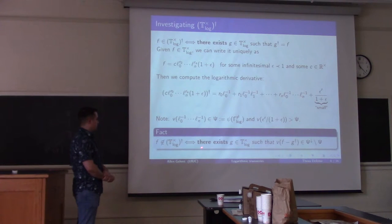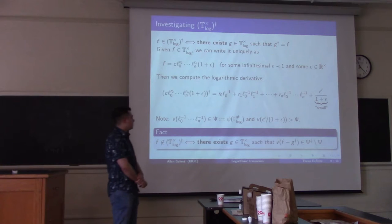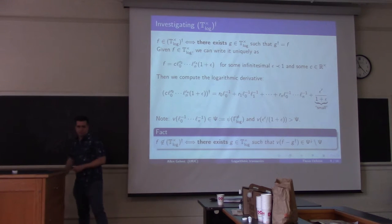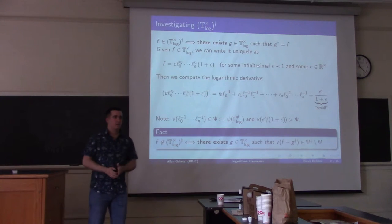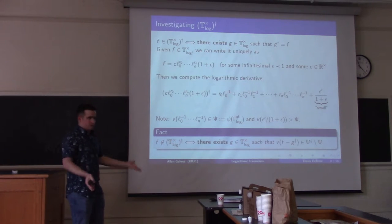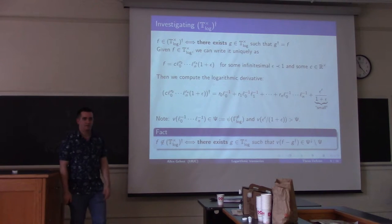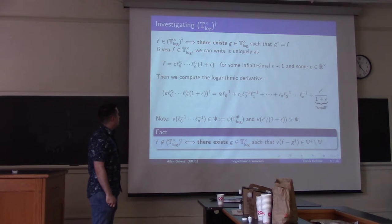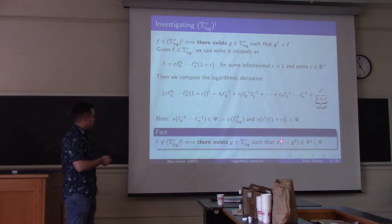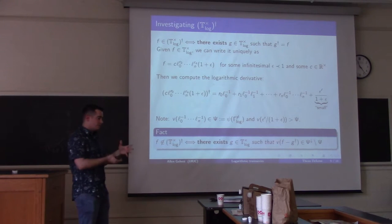We can turn this into an existential definition. An element is not a logarithmic derivative if there exists an element such that, if you compute its dagger, subtract it from your first element, and compute the valuation, you find that it's in the downward closure of the C-set but not in the C-set. Essentially, if you have something that's not a logarithmic derivative, there's going to be some monomial that shouldn't be there. You subtract off all the monomials that should be there so that the bad monomial is the biggest one, then compute the valuation. I claim this is an existential definition — we have the model completeness for the asymptotic couple of T-log in a natural language, so this is a definable subset of the asymptotic couple, and therefore there's an existential definition.